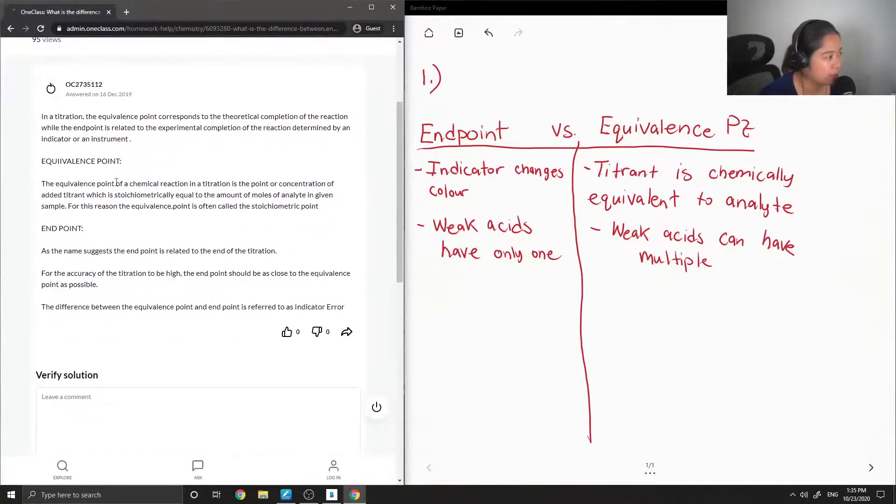The equivalence point is the point or concentration of added titrant, which is stoichiometrically equal to the amount of moles of analyte in given sample. For this reason, the equivalence point is often called the stoichiometric point. Endpoint, as the name suggests, is related to the end of the titration.